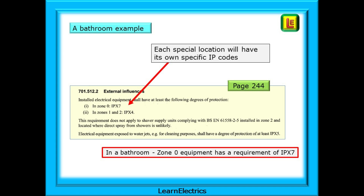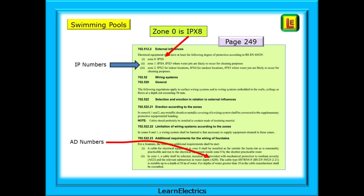Look at bathroom locations as an example, on page 244 of the brown book. Inside the bathtub itself will be zone 0. Any installed electrical equipment — lights perhaps — must be protected against the ingress of water to at least IP X7. Compare this with swimming pool locations on page 249. There is still a zone 0 inside the swimming pool, but the IP code is now IP X8. This is because a swimming pool can have more depth than a bathtub, and greater depth means greater water pressure and a need for a greater degree of protection.